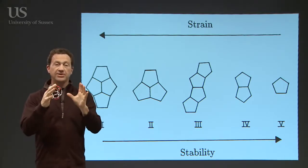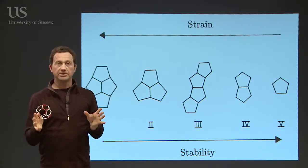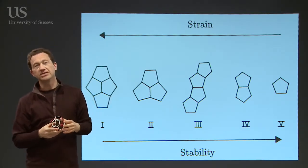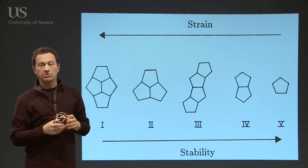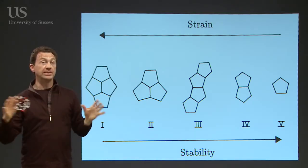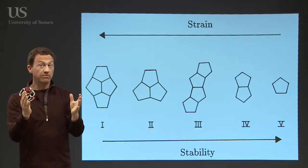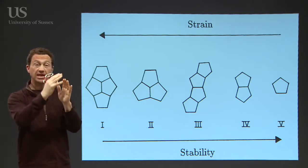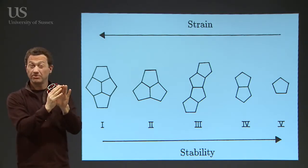Usually with a fullerene, the key thing is to keep the pentagons apart. There's a thing called the pentagon isolation rule. Structures where the pentagons are separated, like in the football structure, are most stable. Structures where the pentagons come together and are side by side are least stable.